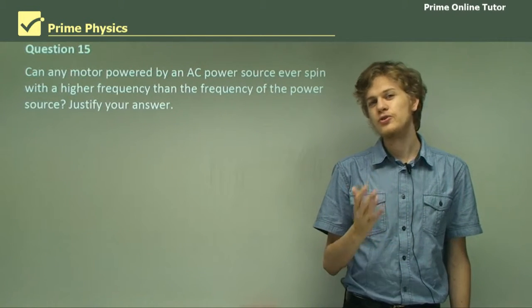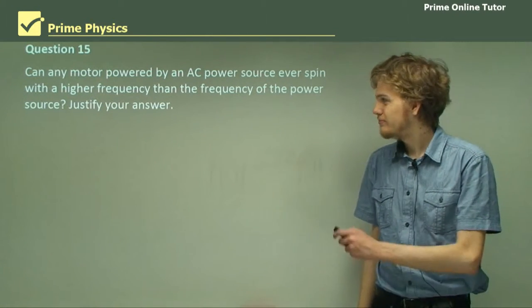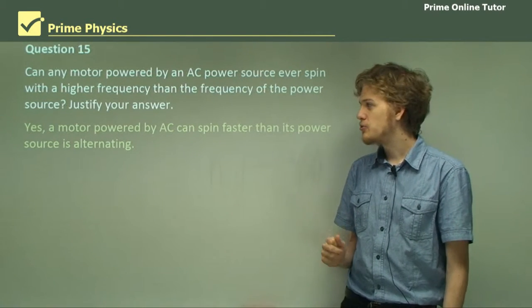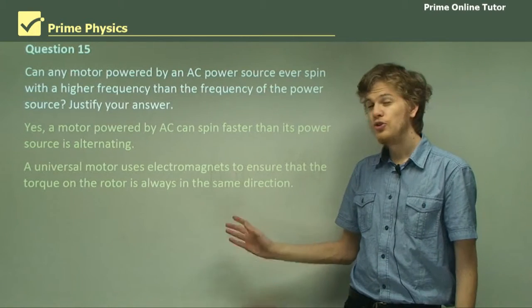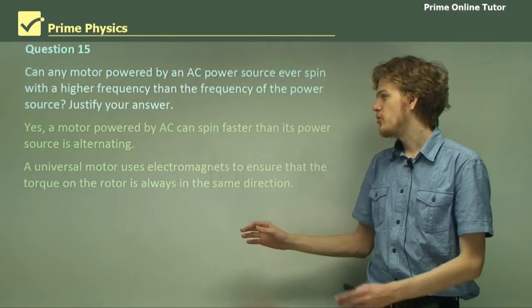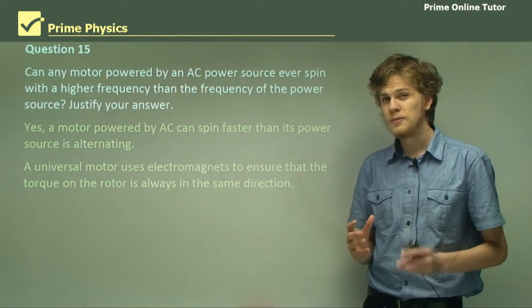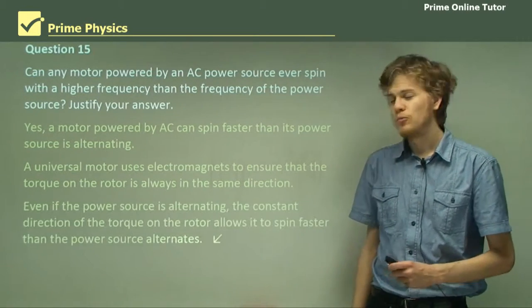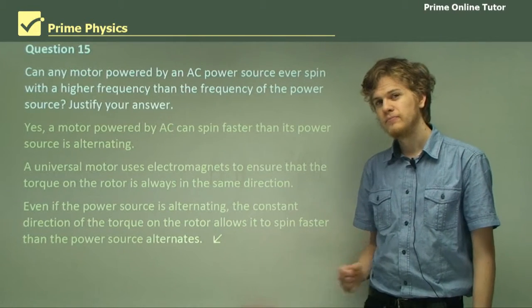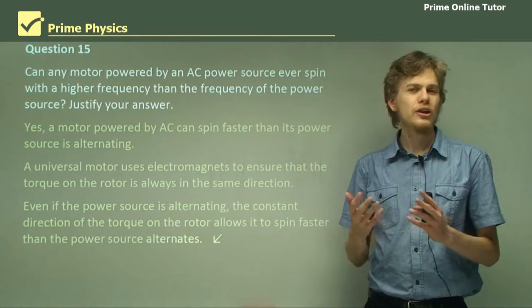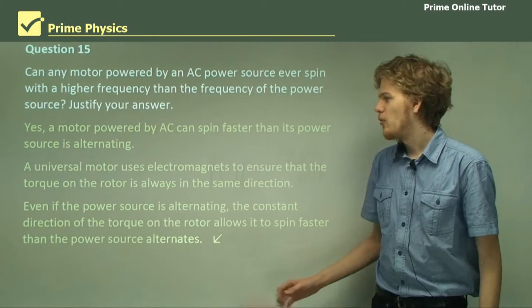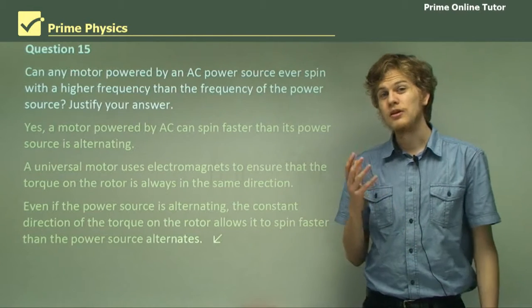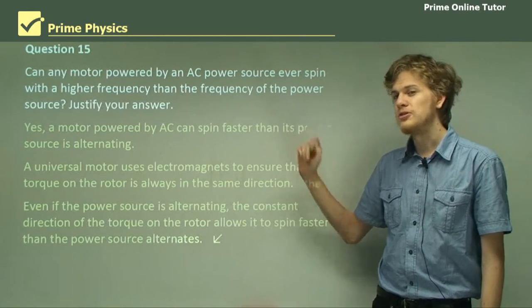But there's one more motor we've learned about that can work with an AC power source. That's right. It's the universal motor. So a motor powered by AC can spin faster than its power source is alternating because a universal motor uses electromagnets to ensure the torque on the rotor is always in the same direction and can therefore operate like a DC motor. And that works even if the power source is changing. So even if we have an alternating power source, we can have the universal motor act in the same way as a DC motor and end up spinning faster than the frequency of the power source.